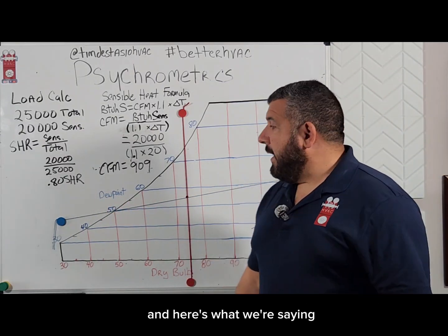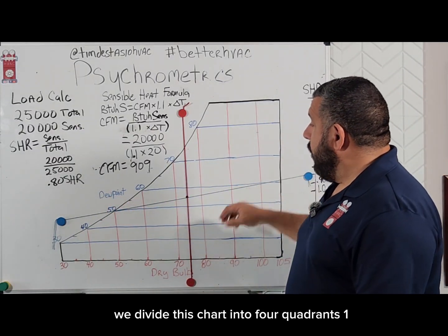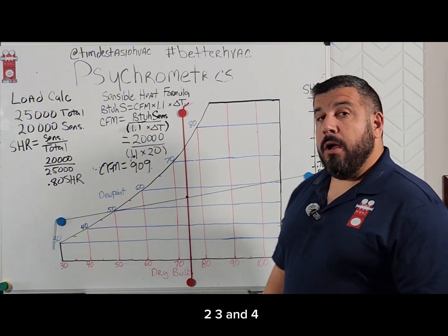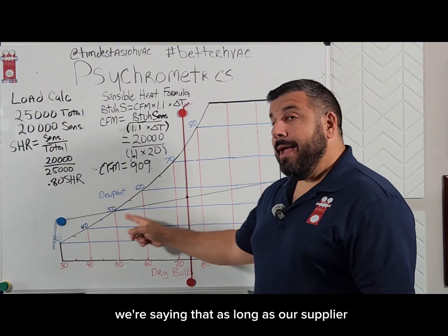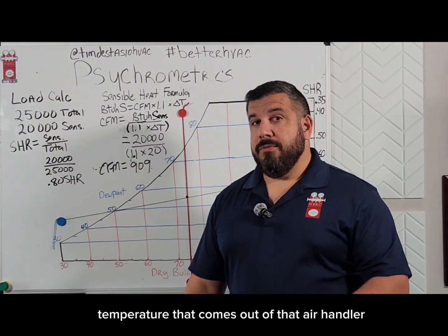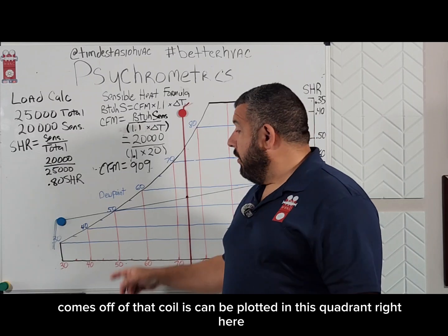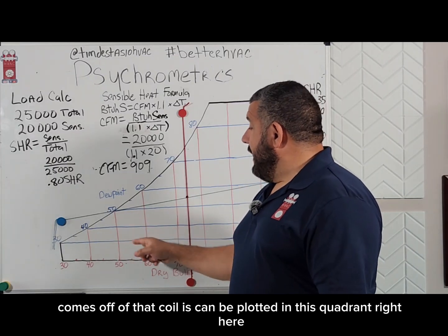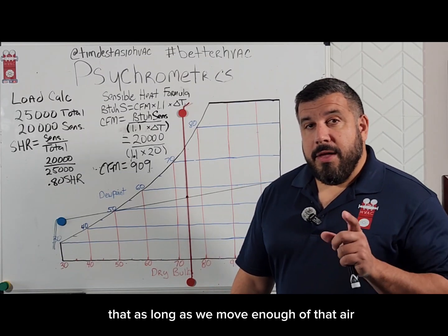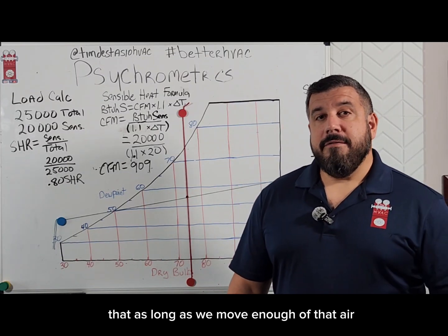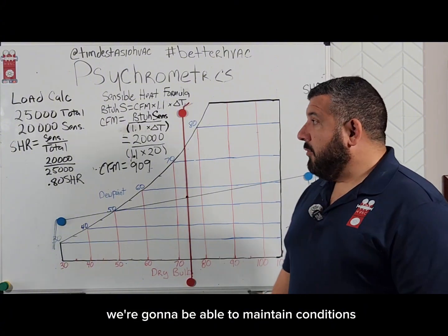Here's what we're saying: we divide this chart into four quadrants — one, two, three, and four. As long as our supply air temperature coming off that coil can be plotted in this quadrant right here, and as long as we move enough of that air, we're going to be able to maintain conditions.